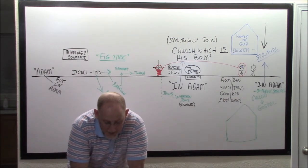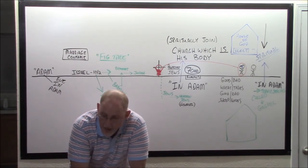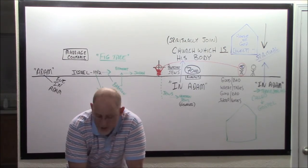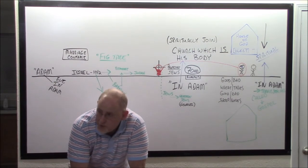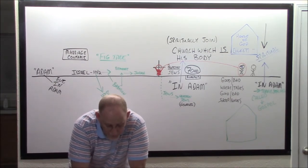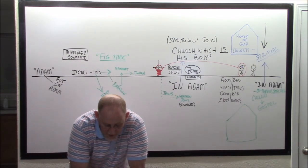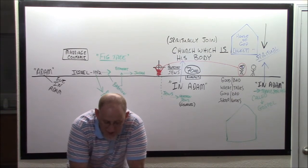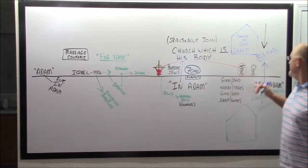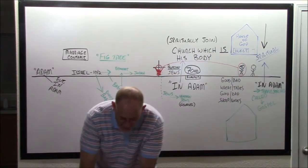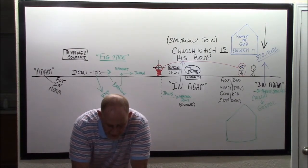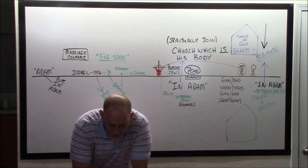But the wise took oil in their vessels with their lamps. While the bridegroom tarried, they all slumbered and slept. What's that talking about? Jesus is gone, they live, die, and go to sleep. Physical bodies go to sleep. At midnight there was a cry made, Behold, the bridegroom cometh. When they hollered the bridegroom's coming, who's he coming for? The bride. Go ye out to meet him. All those virgins arose and trimmed their lamps. The foolish said unto the wise, Give us of your oil, for our lamps are gone out.